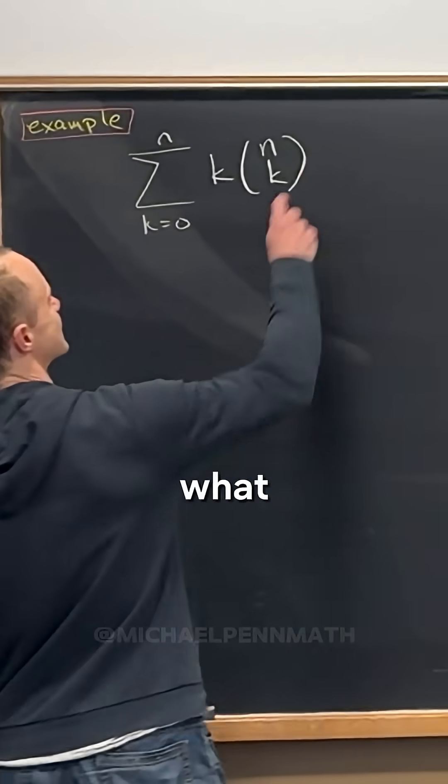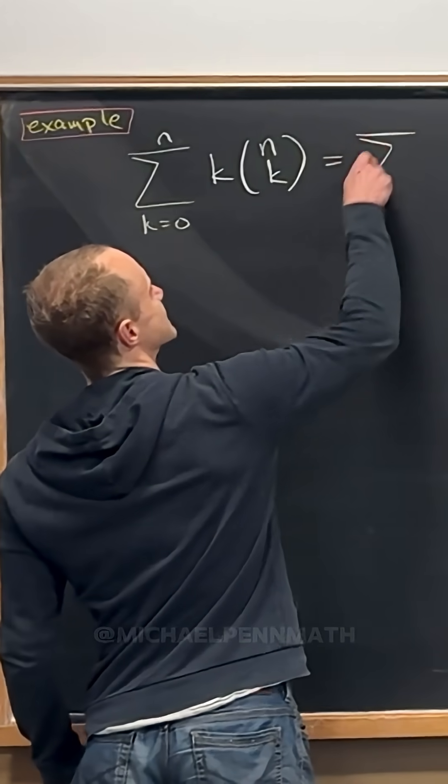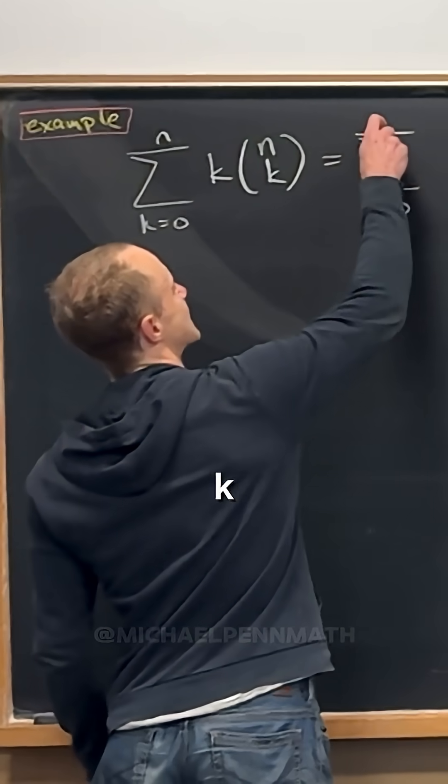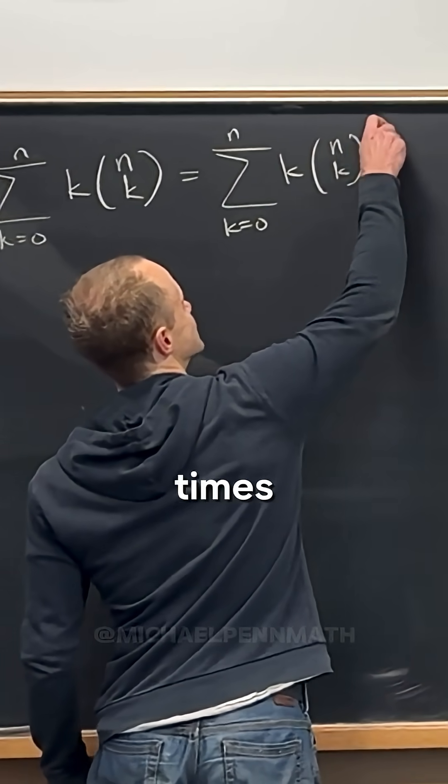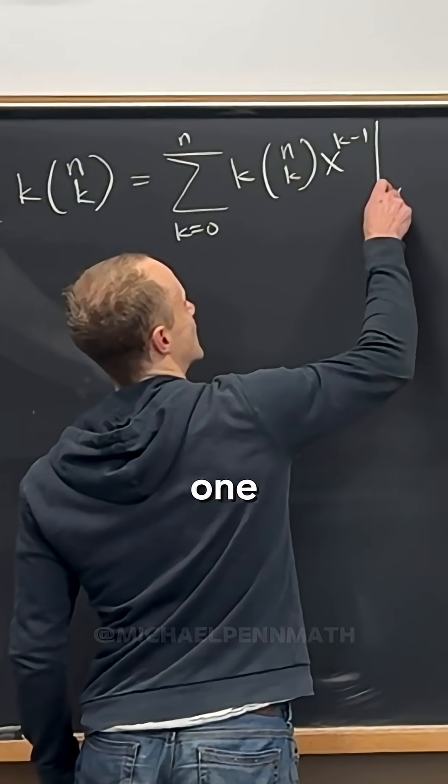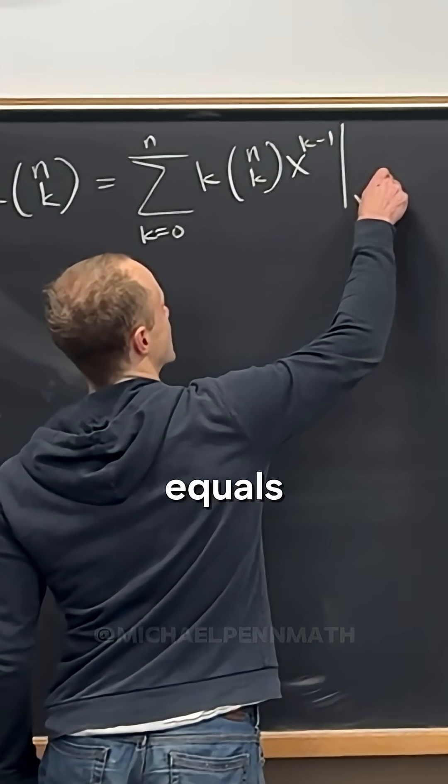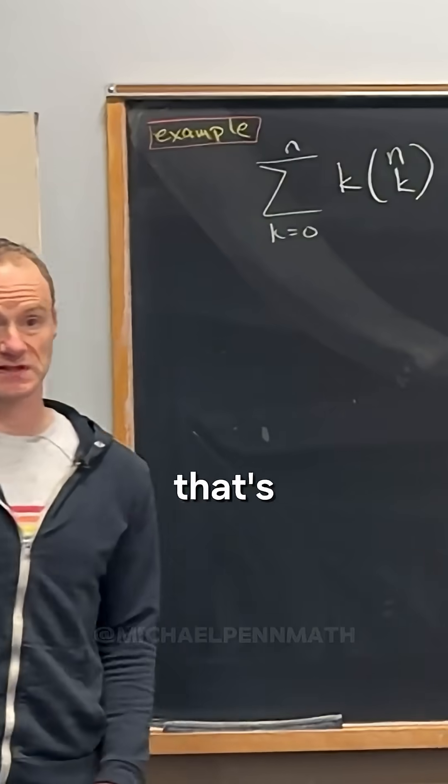So here's what I want to do. I want to write this as the sum, as k goes from 0 to n, of k times n choose k times x to the k minus 1 evaluated at x equals 1. That's the same, right?